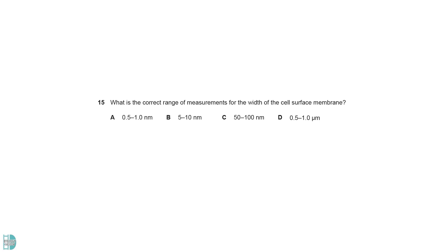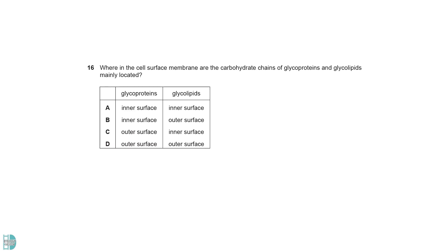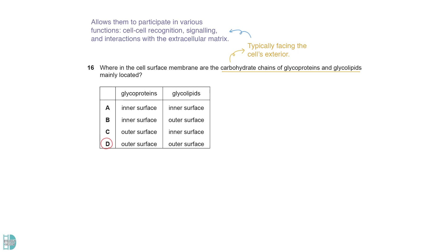The cell surface membrane can range from 5 to 10 nanometers, with 7 nanometers being the most typical width. The carbohydrate chains typically face the cell's exterior. The exposure of the carbohydrate chains on the cell exterior allows them to participate in various functions, including cell-cell recognition, signaling, and interactions with the extracellular matrix.